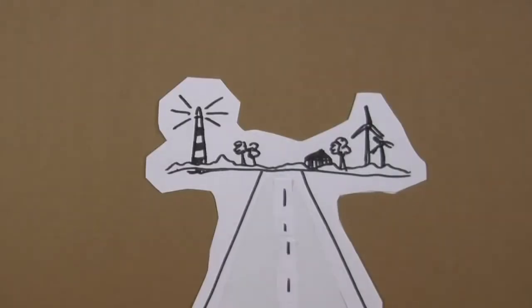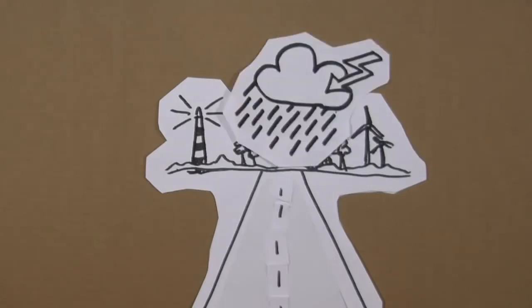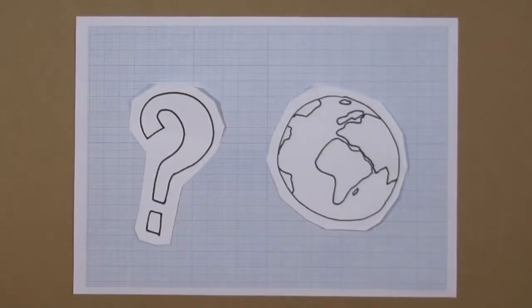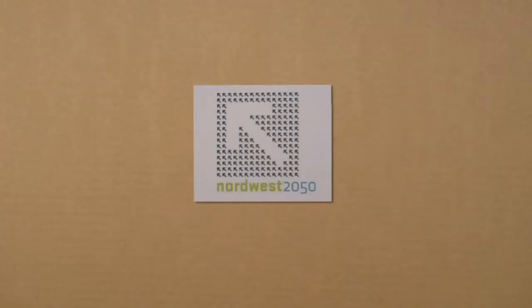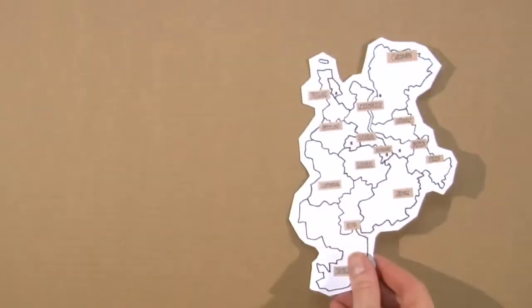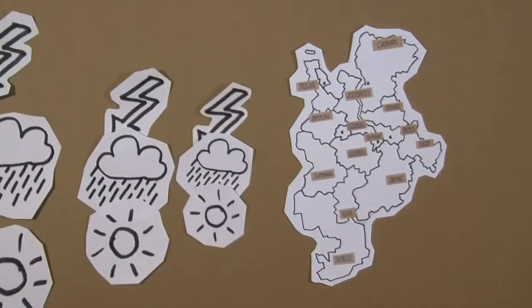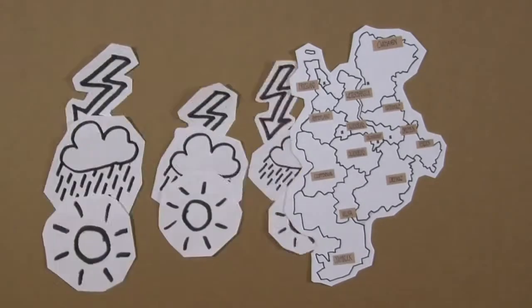But this measurable climate change is not just a global phenomenon. Even our regional climate, that is the typical course of our local weather over a long period, has also changed. How will this trend continue? What should we expect here in the northwest region of Germany? The project Northwest 2050 researches how climate change will affect the metropolitan region Bremen-Oldenburg in particular.